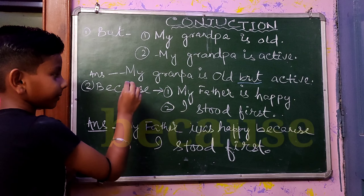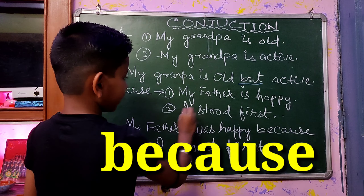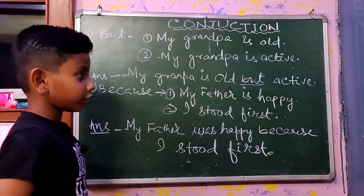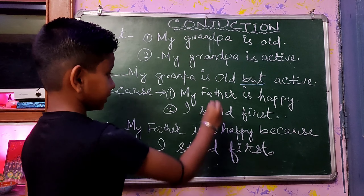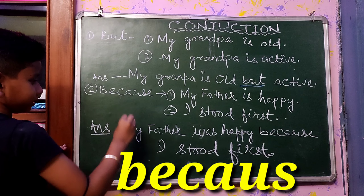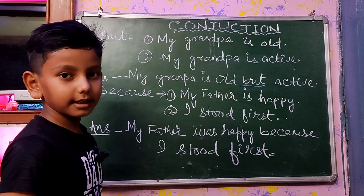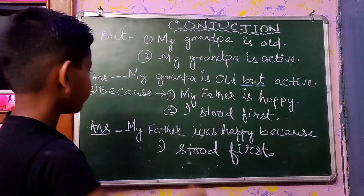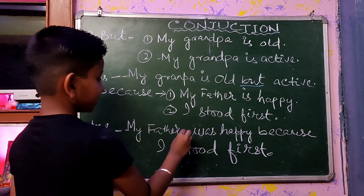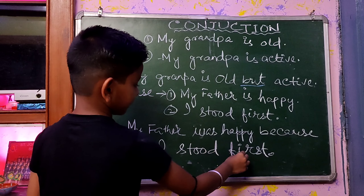Now friends, BECAUSE: 'My father is happy. I stood first.' To join these two sentences, we use the conjunction word BECAUSE. And the sentence that comes after joining BECAUSE is: 'My father was happy because I stood first.'